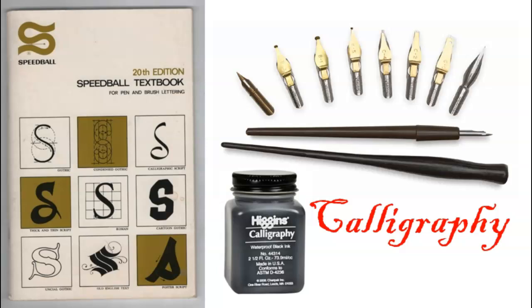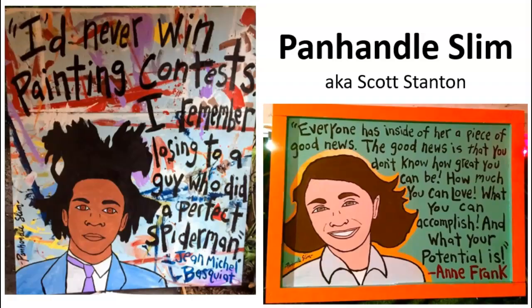I don't teach calligraphy in elementary school, but of course many of us learned calligraphy with the time-old classic — the Speedball calligraphy lettering book and the traditional dip pens and black ink. I don't often teach artists specifically, but this is one that I do. This is a contemporary artist named Panhandle Slim — his actual name is Scott Stanton — and he is a fantastic contemporary artist. He does a lot of social justice work. Something will be in the news today and he will have a painting of it tomorrow. You often see his work at protest movements. What he does is he combines either very abstract or very solid, colorful backgrounds with very simple cartoon-like portraits of famous people and quotes of what these people have said.